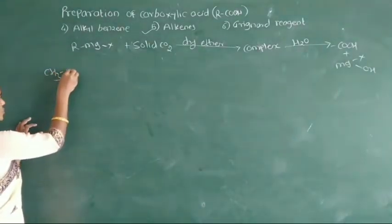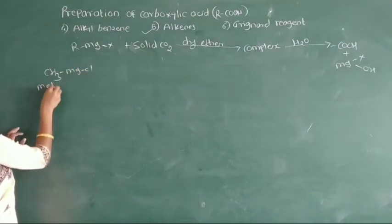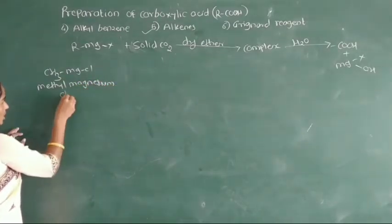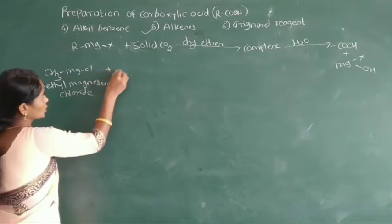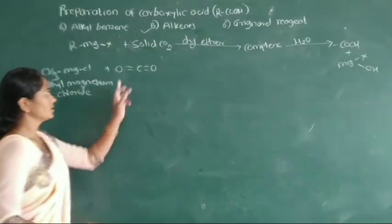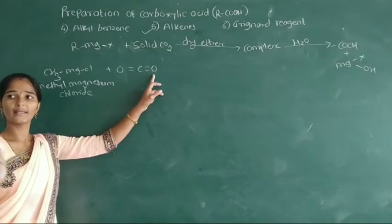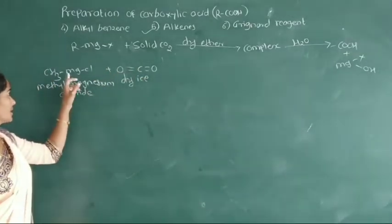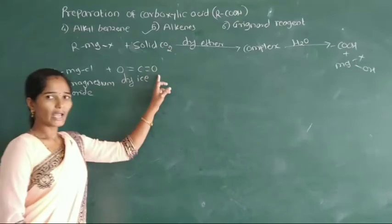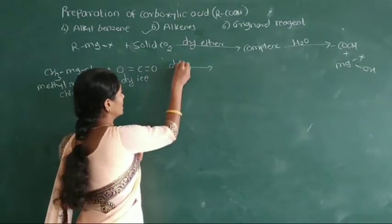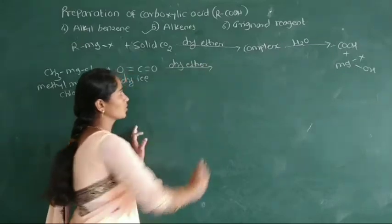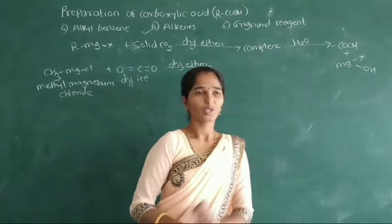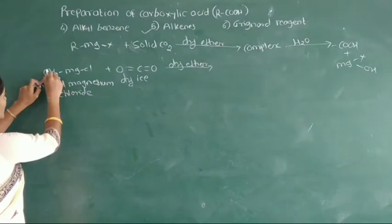We take an example. Suppose we take CH3MgCl — this is called as methyl magnesium chloride. This methyl magnesium chloride reacts with solid carbon dioxide, which is also called as dry ice. This Grignard reagent reacts with dry ice and here formation of a complex — this complex is the magnesium salt of carboxylic acid. The methyl group of the Grignard reagent adds to the carbon of CO2.